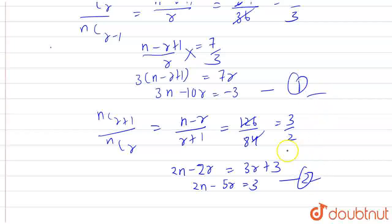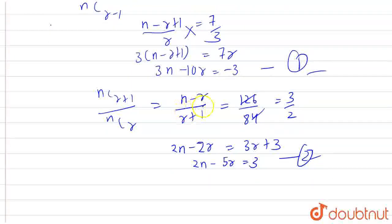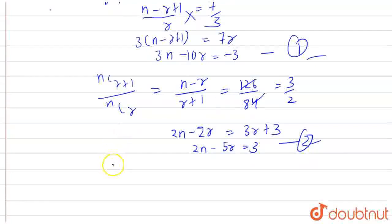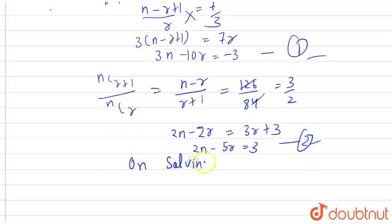On solving first and second equation, we have two variables and two equations. On solving first and second equation, we will get N is equal to 9 and R is equal to 3. And that is our answer.